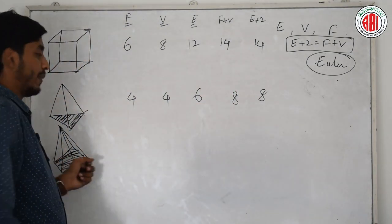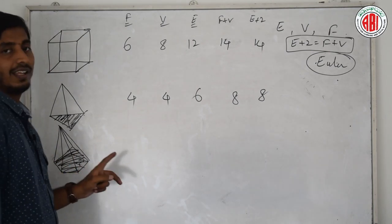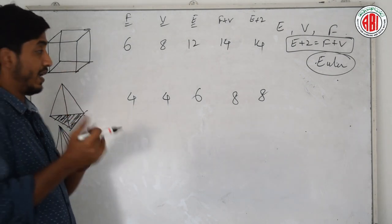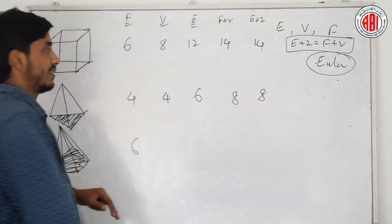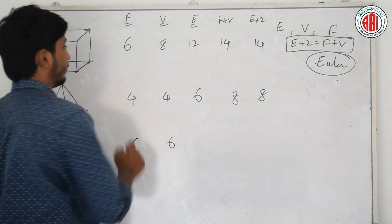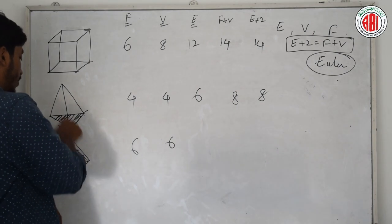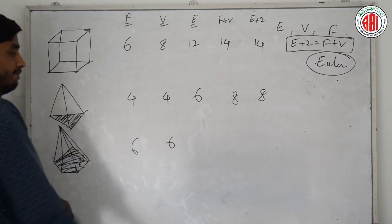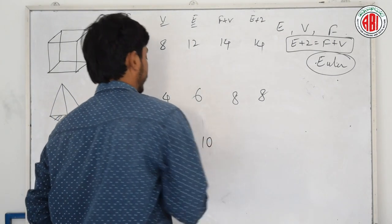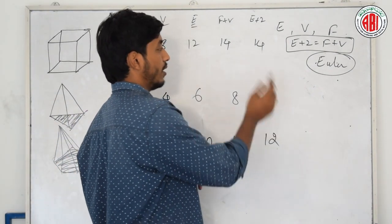And the next, pentagonal pyramid. How many faces? Obviously, 5 faces of pentagon sides and the base, totally 6. How many vertices? 1, 2, 3, 4, 5 and 6. How many edges? 1, 2, 3, 4, 5, 6, 7, 8, 9, 10. The base 5 and the lines to the tip. Now 6 plus 6 is 12, 10 plus 2 is also 12.